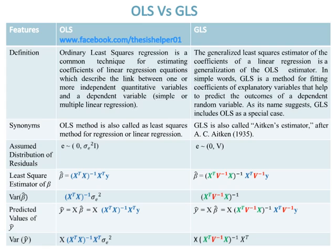The variance of Y Cap in OLS is: Var(Y Cap) = X (X^T V^(-1) X)^(-1) X^T multiplied by the variance of error. While the variance of Y Cap in GLS is: Var(Y Cap) = X (X^T V^(-1) X)^(-1) X^T.